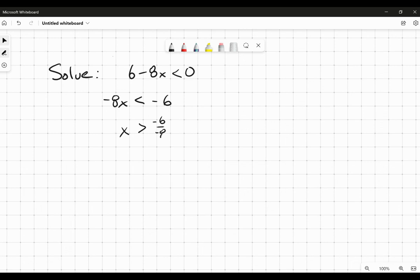So you get negative 6 over negative 8, but now x is greater than that. Then we're going to reduce that. We're going to get x is greater than three quarters.